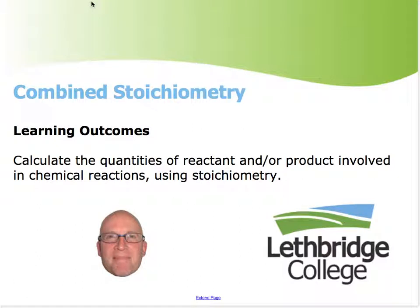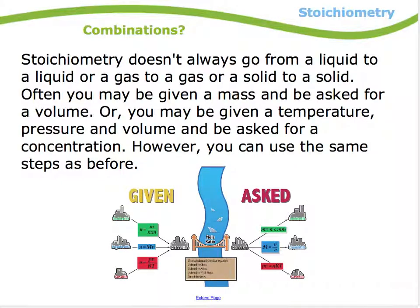All right. Of course, stoichiometry isn't always just going to be mass to mass or liquid to liquid or gas to gas. Sometimes it'll be a combination of any one of those. But the procedure for doing any kind of stoichiometry is always the same. Determine a chemical reaction, determine what is given, what is asked, and then follow the steps. Determine the steps and follow them.